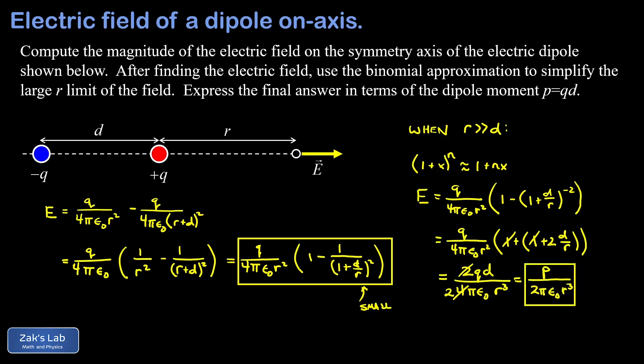So because we went through the process of using this binomial approximation in the large r limit, we now have a clear sense for how the electric field is dropping off as we move far away from the dipole compared to the separation distance of the charges. So e is actually dropping off as a one over r cubed instead of a one over r squared.